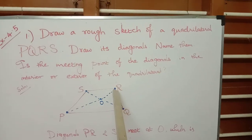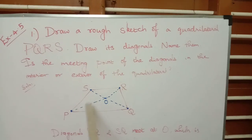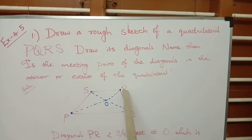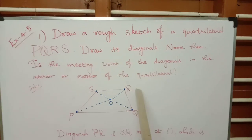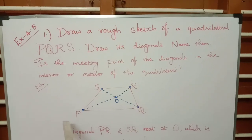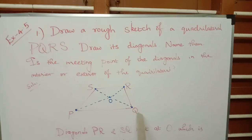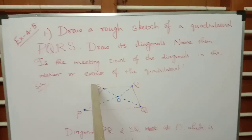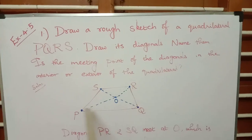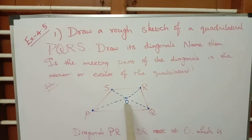Now look at the point R. The non-adjacent vertex of R is P alone, so we can draw a diagonal. A diagonal is a line joining the non-adjacent vertices, so RP is a diagonal and SQ is also a diagonal. There are two diagonals in this quadrilateral: SQ and RP. These two diagonals meet at a common point, that is O.